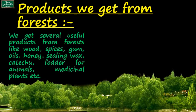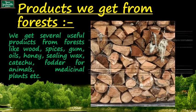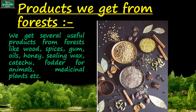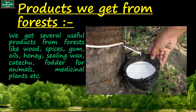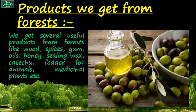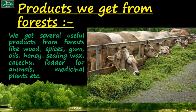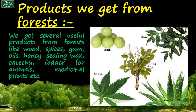We get several useful products from forests like wood, which is used to make the paper that we write on. Then we get spices, gum, and rubber, which is used to make the eraser that we use. Various oils like olive oil, saffron oil, honey, and also the fodder that we give to our cattle. And lastly, we also get several medicinal plants and herbs from the forest.